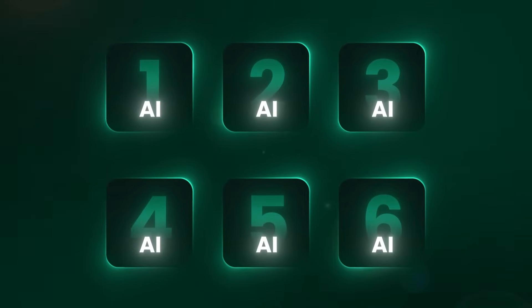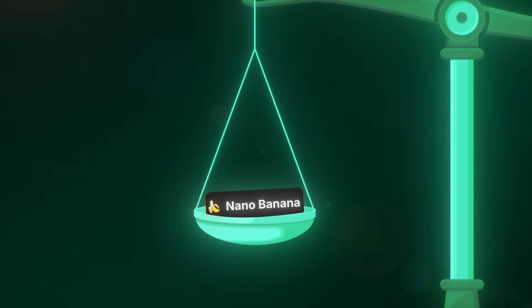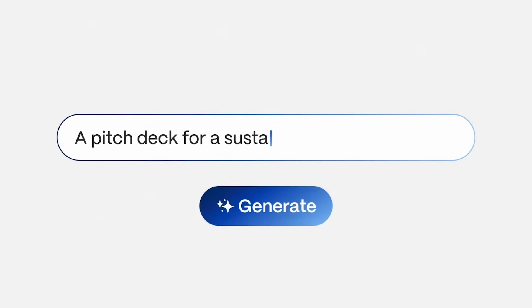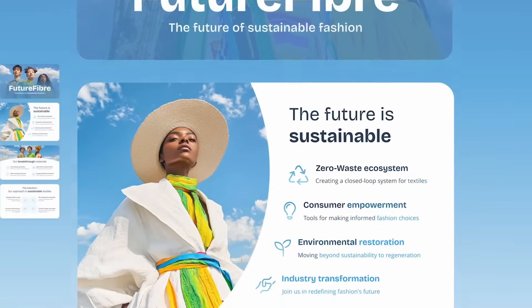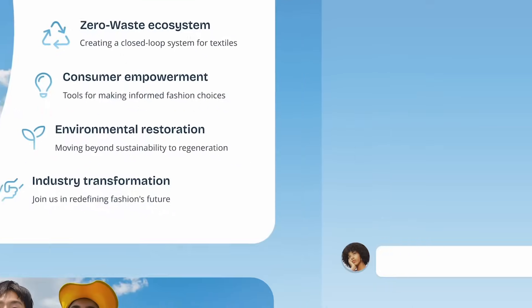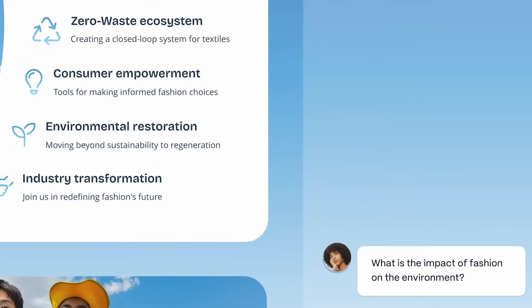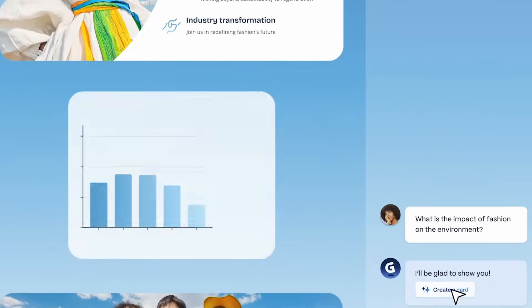I've got a whole host of exciting new AI tools to show you — from an open source character replacement which allows you to turn yourself into anyone, to an AI image model that is outperforming Google's Nano Banana. We also have the best AI design agent I've ever seen, allowing you to create complex presentations and websites in seconds. If you're new here, I'm AI Samson and on this channel we explore the latest possibilities in AI technology.